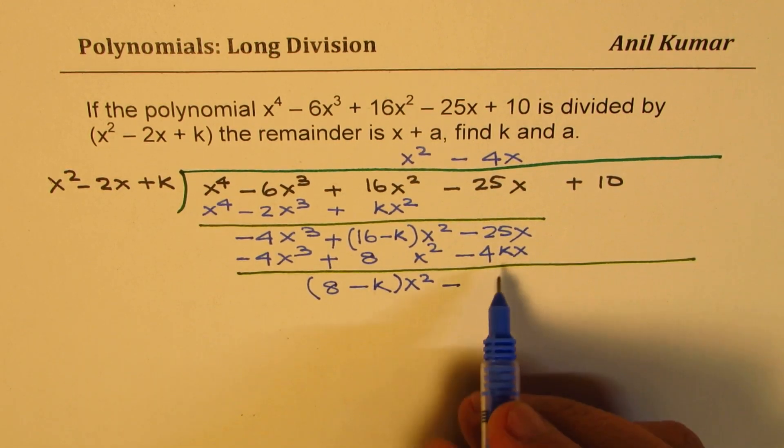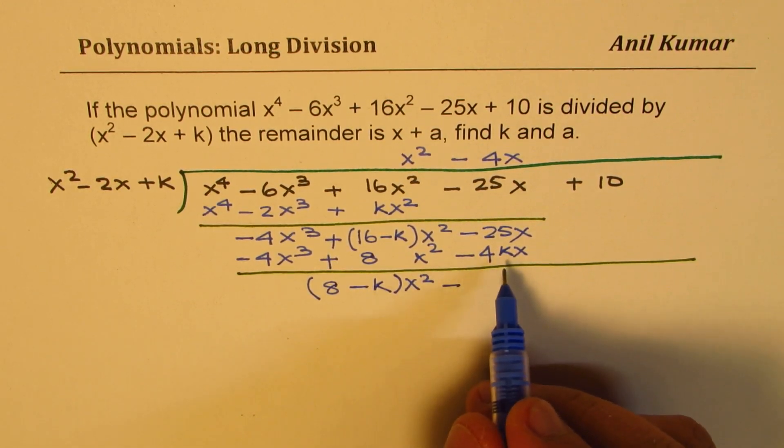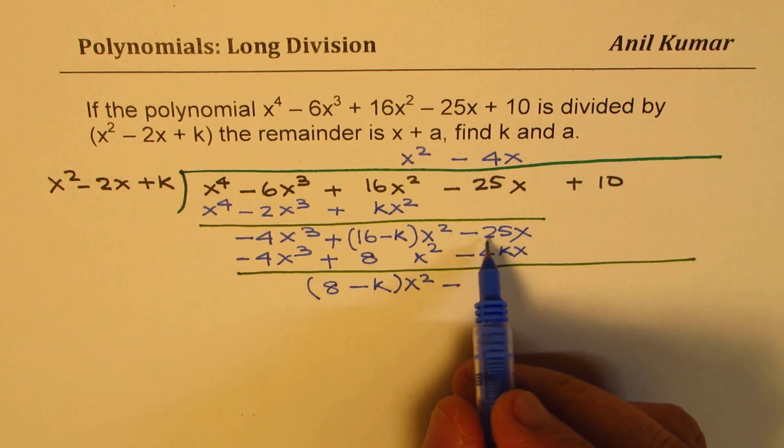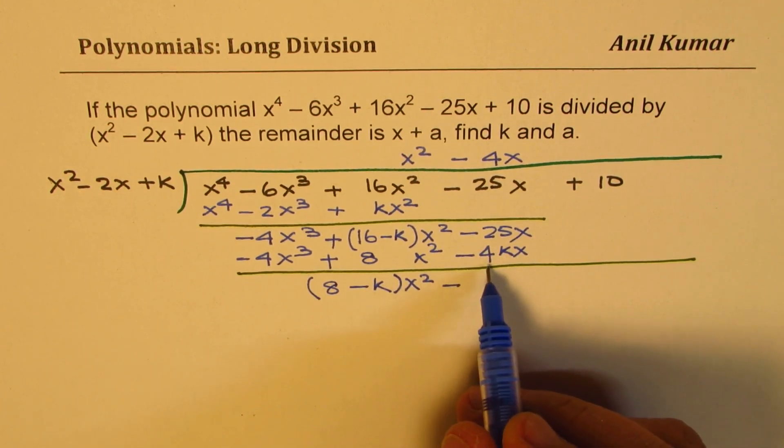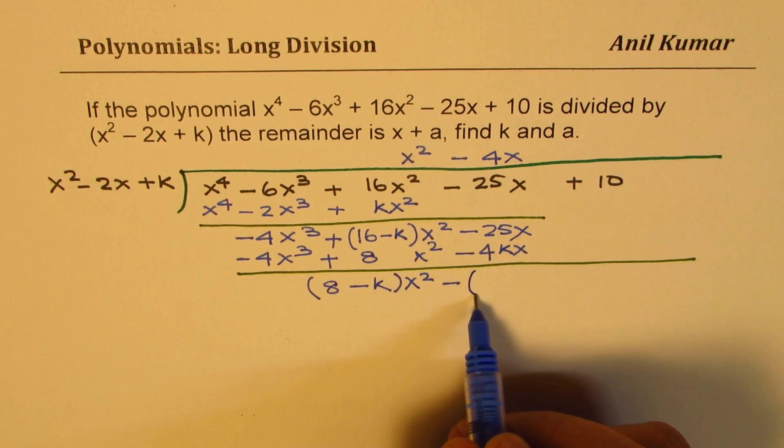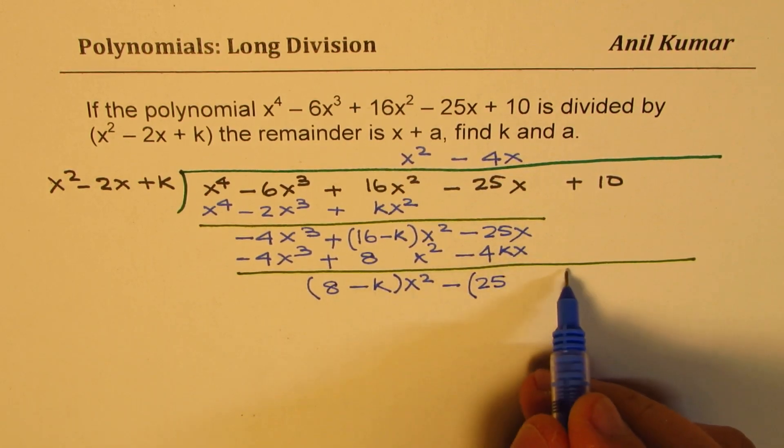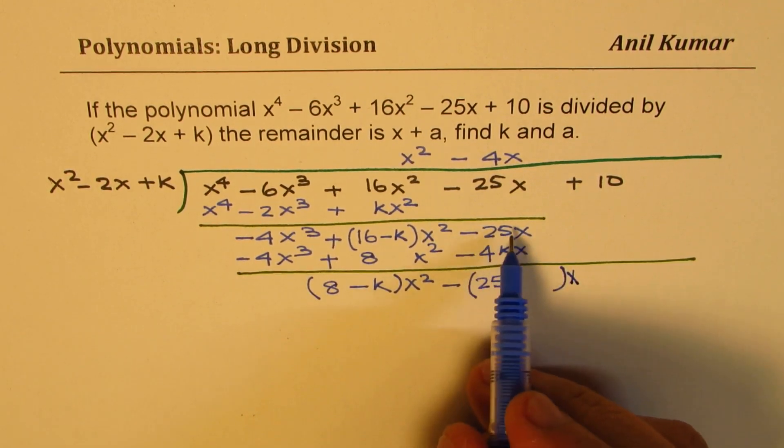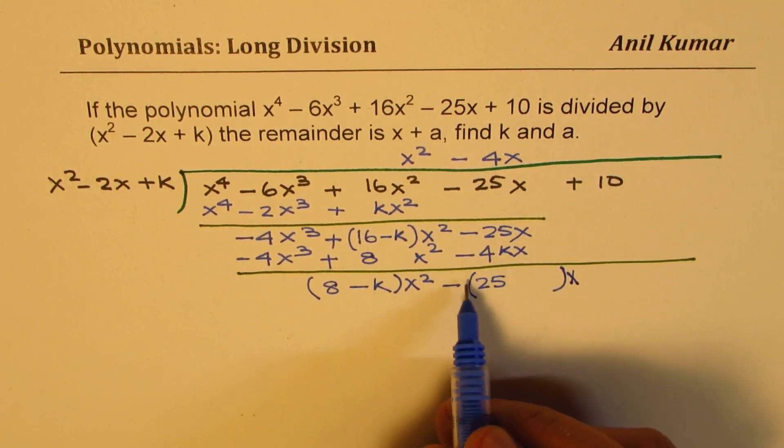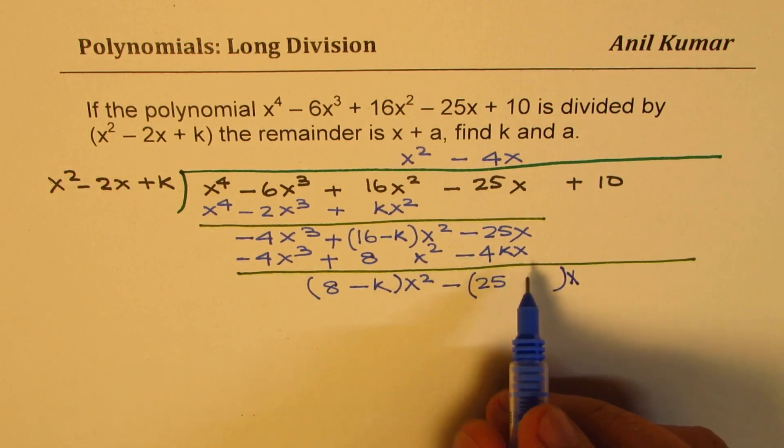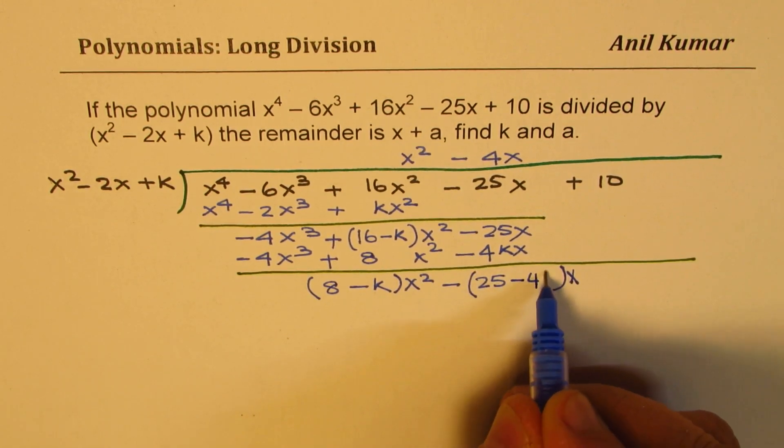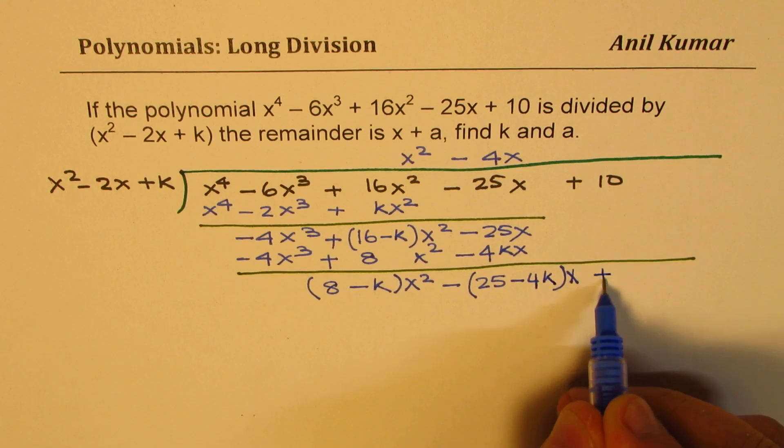I have taken minus outside. Now if you normally do you get -25x + 4kx. So when I take minus outside I write this as 25. I am taking x outside. So 25 minus, I actually need this as positive, so I will write minus 4k. Does it make sense to you? Bring down 10. This is kind of a critical step.